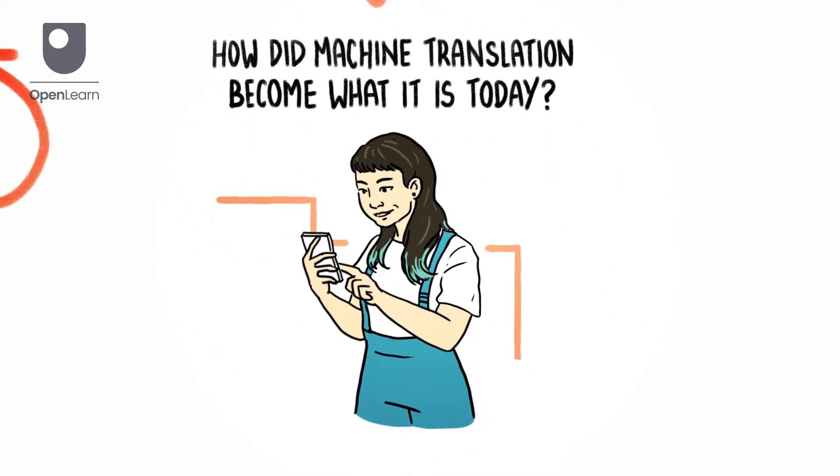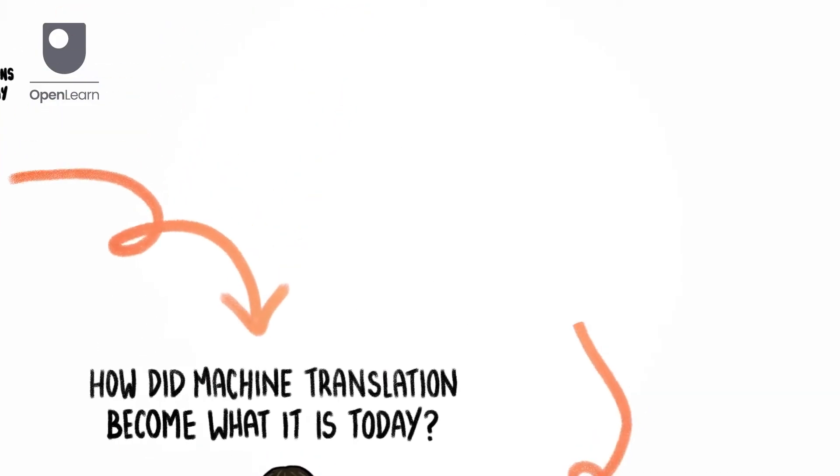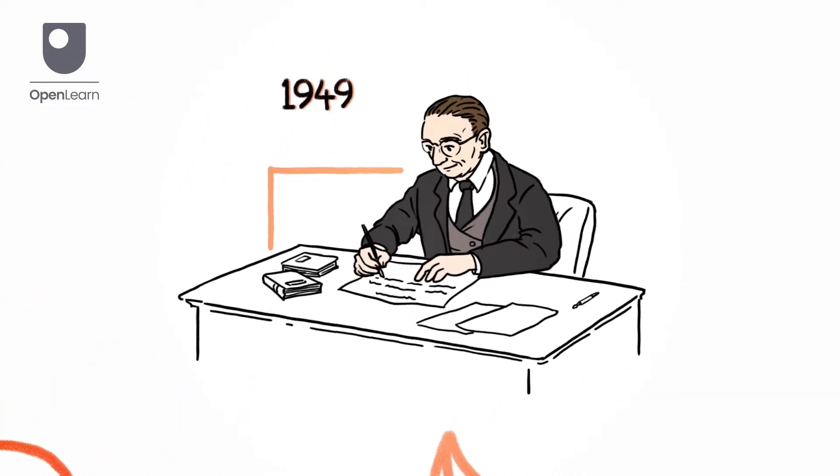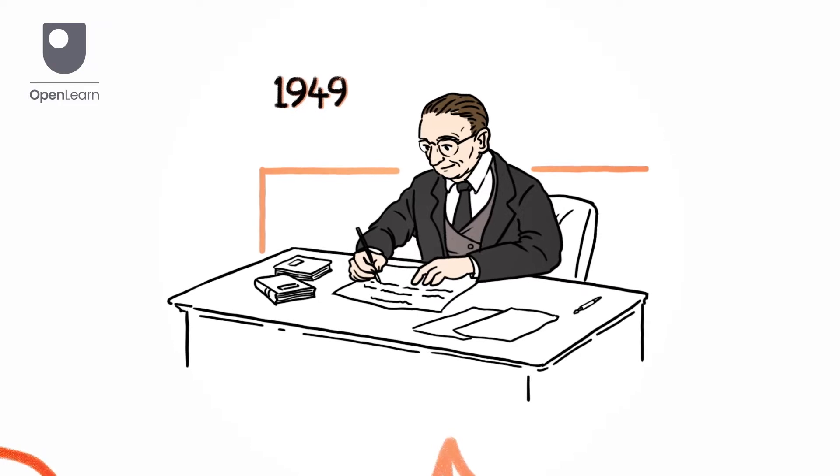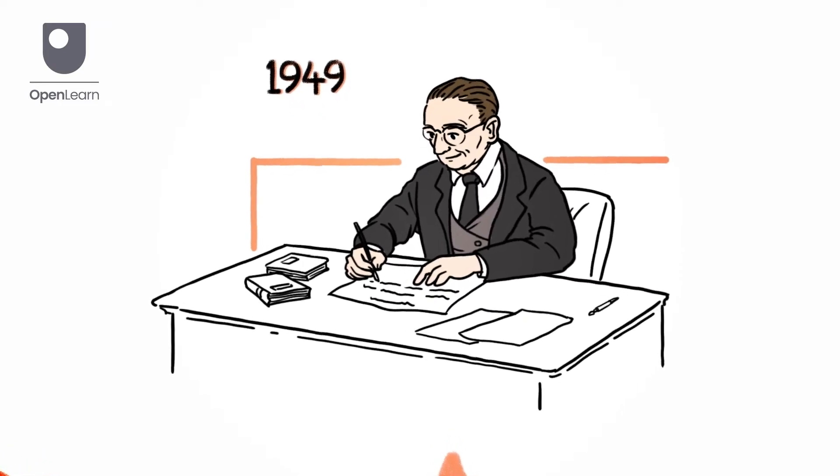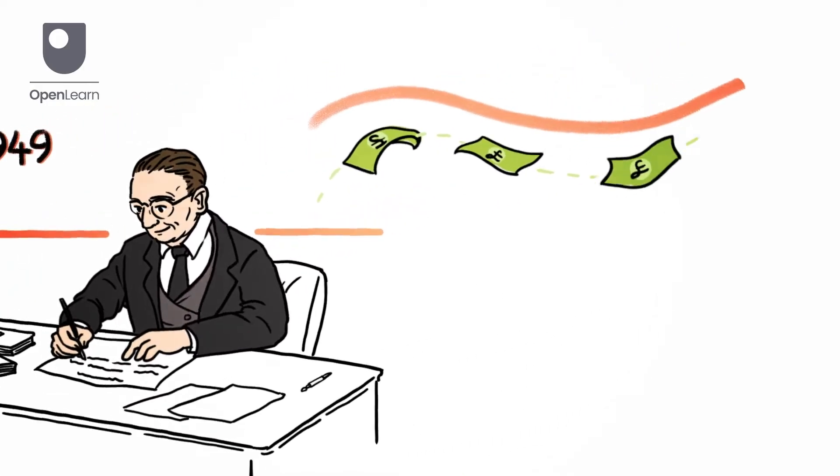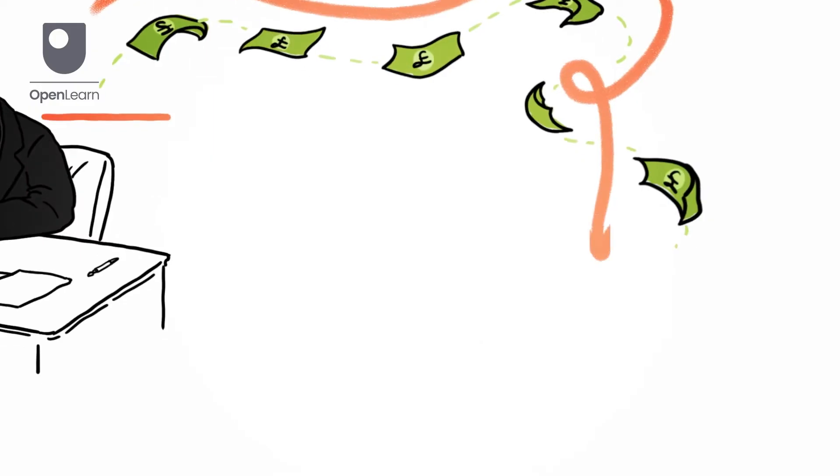But how did machine translation become what it is today? To trace its origins, we go back to 1949 when Warren Weaver, a mathematician at the Rockefeller Foundation, proposed the idea of a machine capable of translation. His vision sparked enthusiasm and funding started flowing in.